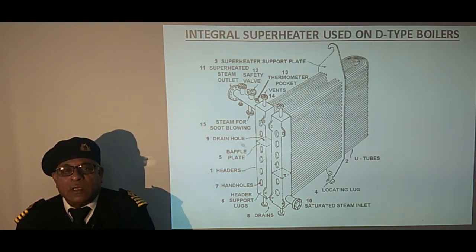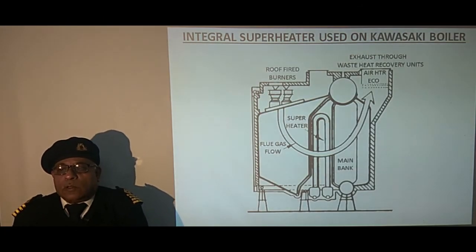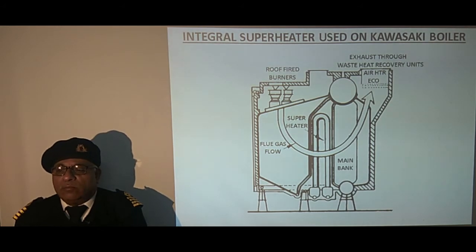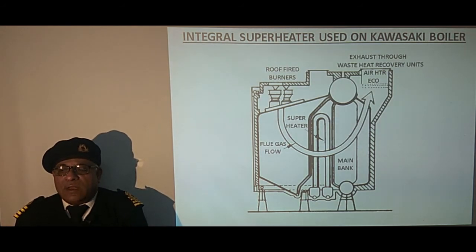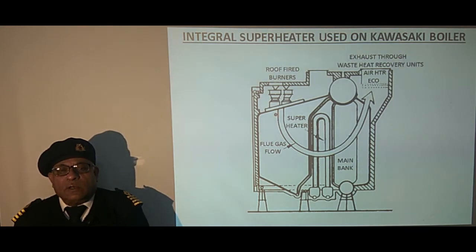Here we have a steam connection which comes out from the manifold for soot blowing purpose used in the boiler. This is a Kawasaki boiler which has vertically arranged superheater tubes parallel to the screen and generating tubes, attached to horizontally arranged headers at the bottom. This arrangement provides better drainage of condensate. In this modern boiler, the burners are on the roof and the flue gas passes over the screen tubes then through the superheater.